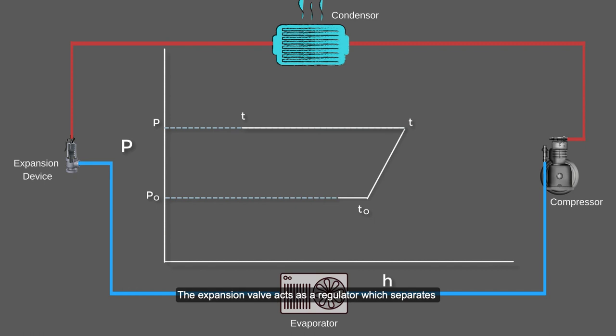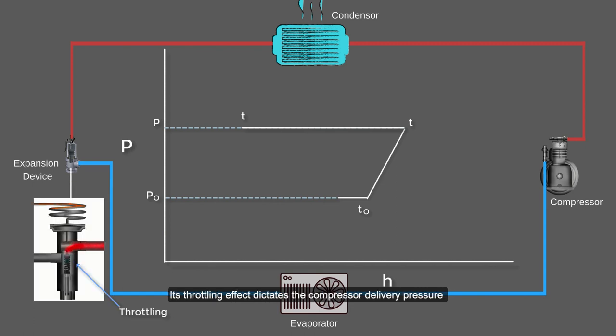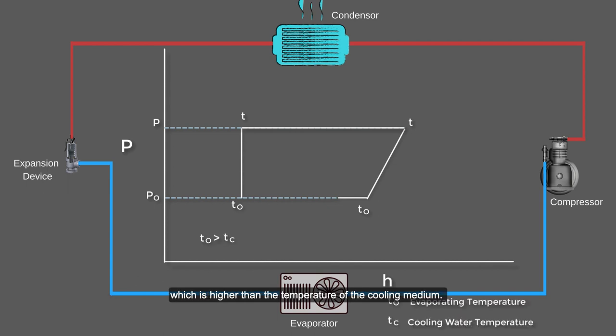The expansion valve acts as a regulator which separates the high pressure and low pressure side. Its throttling effect dictates the compressor delivery pressure, which must be significant to give the refrigerant a saturation temperature which is higher than the temperature of the cooling medium.